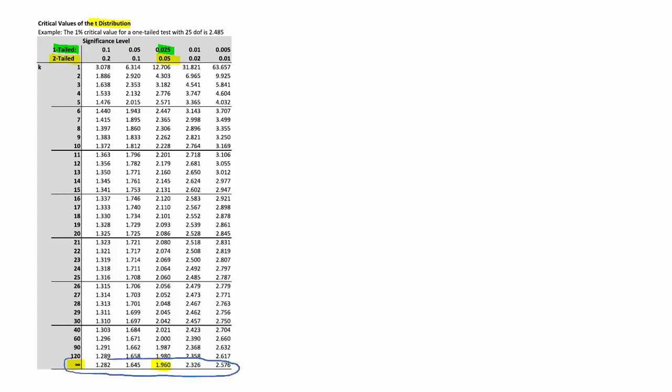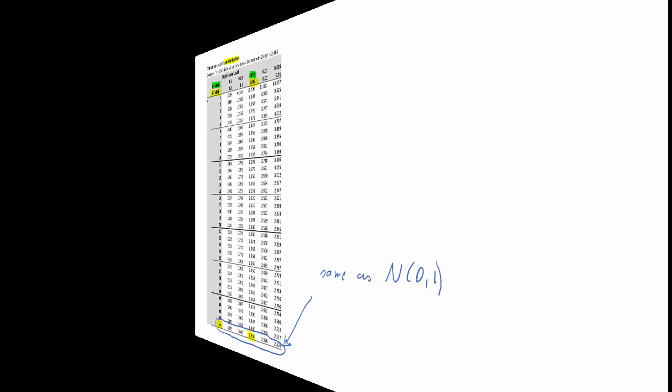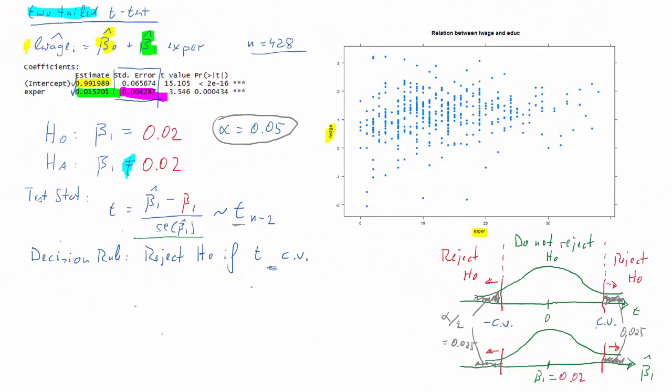Also note that in this t distribution table the last row with degrees of freedom infinity is really the same as the data from standard normal distribution. So it was 1.96. We can now enter this value in our little picture to see